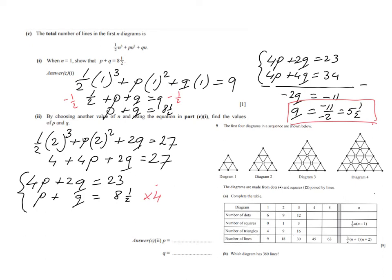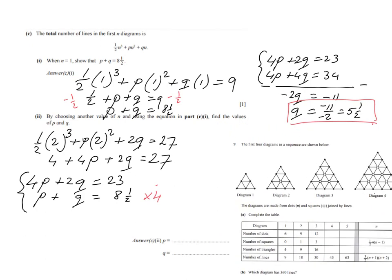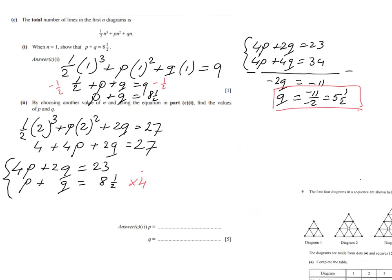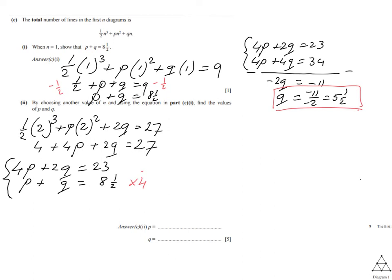I will continue here. There's not a lot of space. So q is 5.5. We say that p plus q is 8.5. That was that first equation. So p plus 5.5 is 8.5. So p equals 8.5 take away 5.5. p equals 3. There we go. And those are the values of p and q.